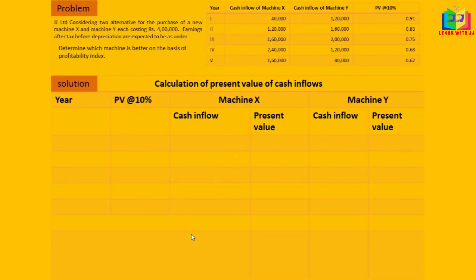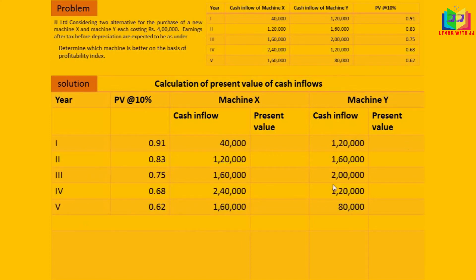Let's see how to solve this problem. This is the format for calculating the present value of cash inflows. First we write the year, then the PV factors given, the cash flows for Machine X, and the cash flows for Machine Y as provided in the problem.